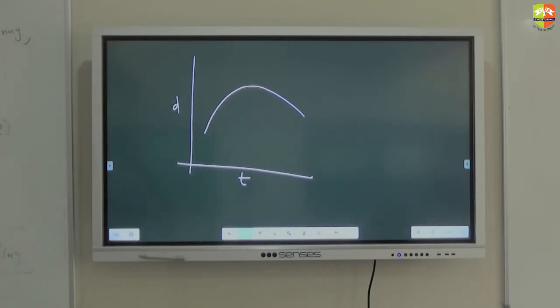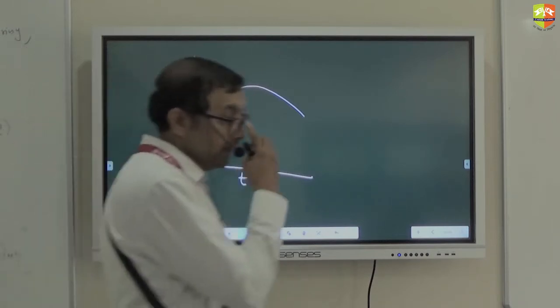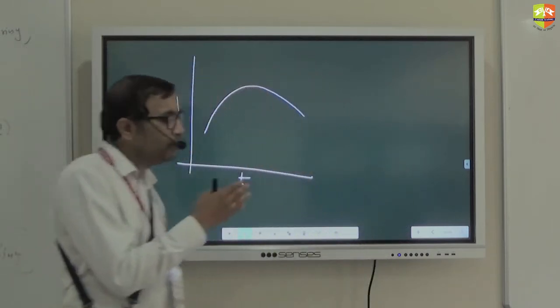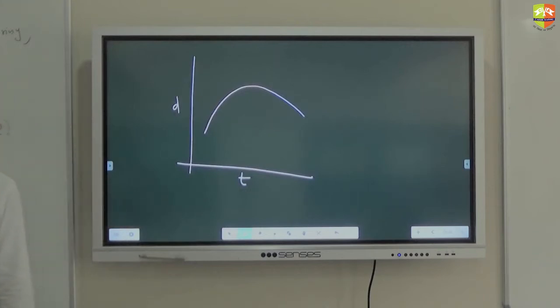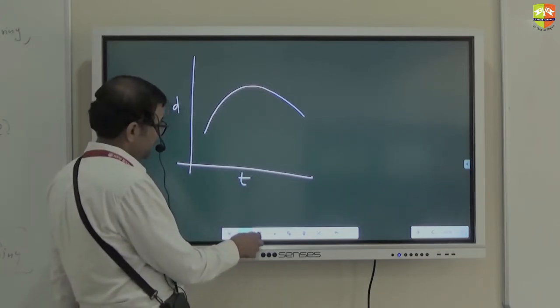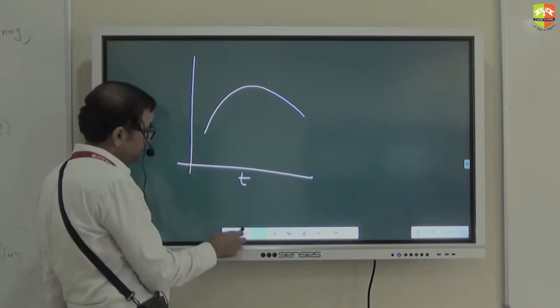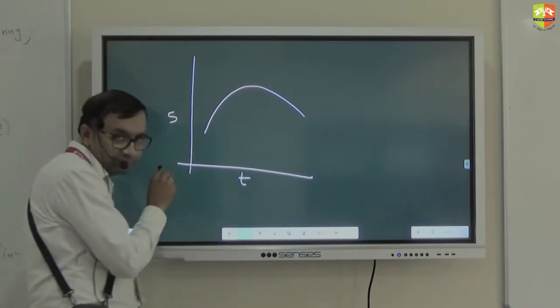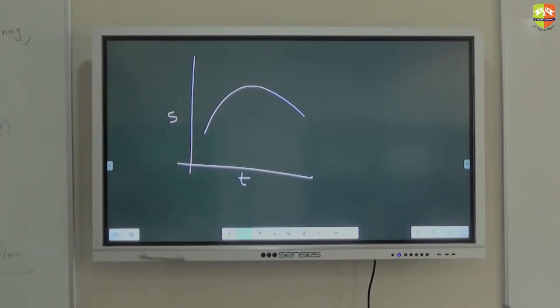Distance cannot decrease. Okay. It will always accumulate. So, the slope of distance time graph will always be positive. Slope of distance time graph will always be positive. The distance always increases with time. And, if suppose, this is your displacement time graph.